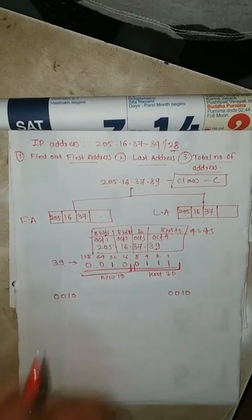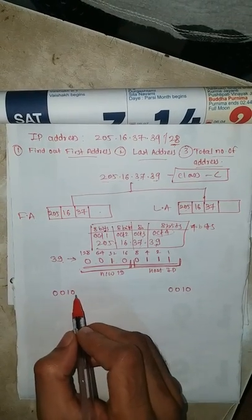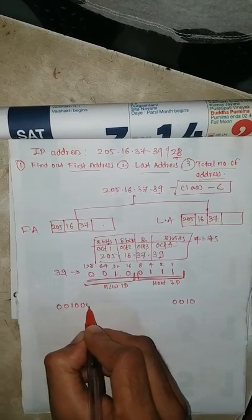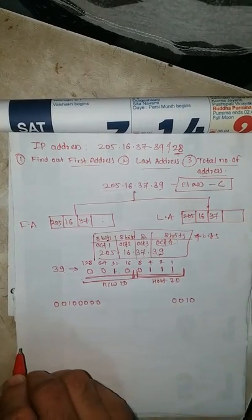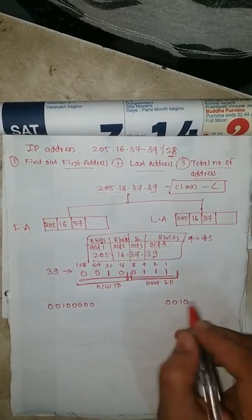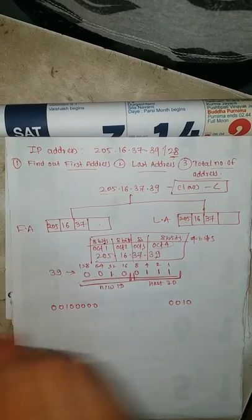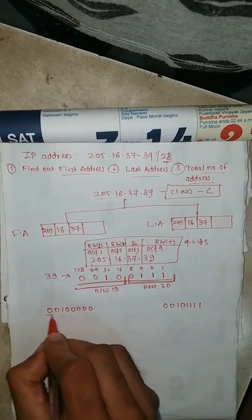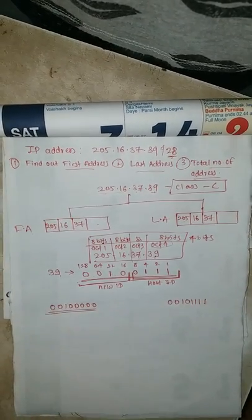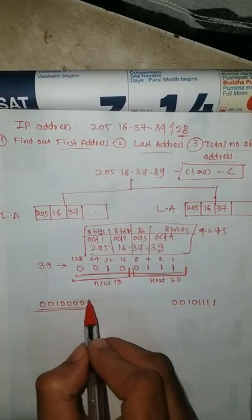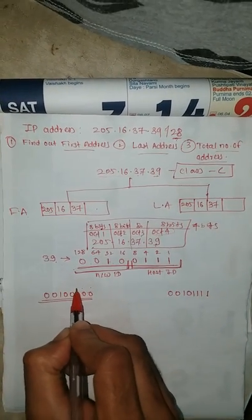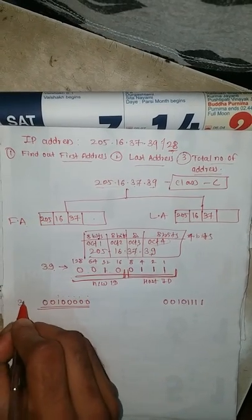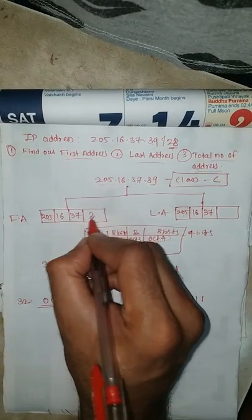To find the first address — that is the network address — the remaining 4 host bits are all converted to 0s. So the network ID bits are 0010 and host bits become 0000, giving us 00100000 in binary. Converting back: 32 in decimal. So the first address is 205.16.37.32.